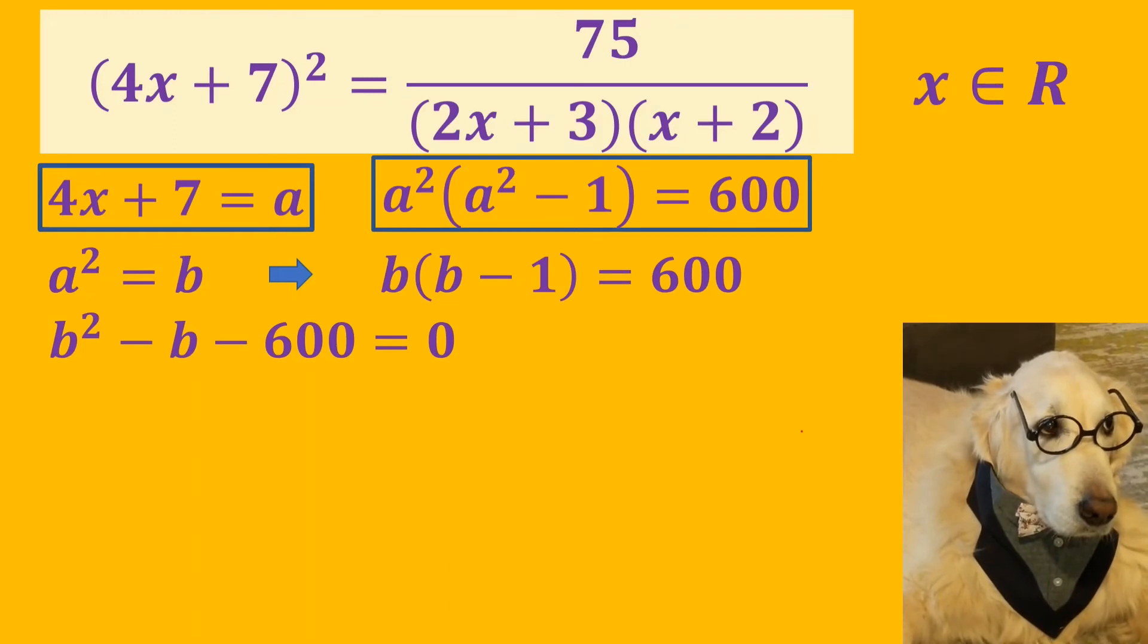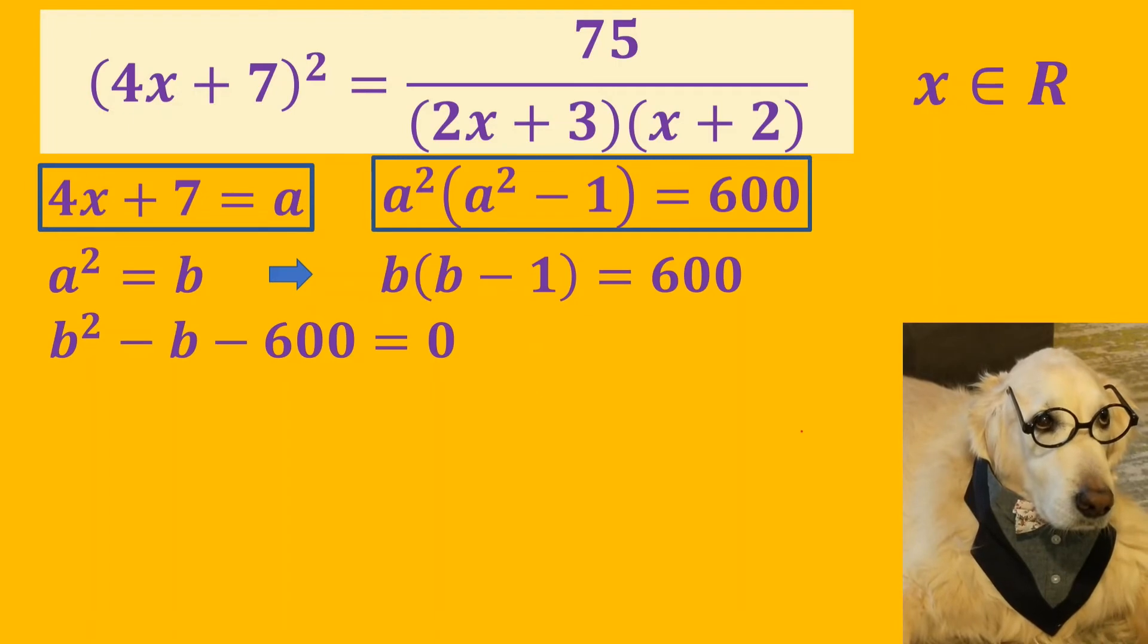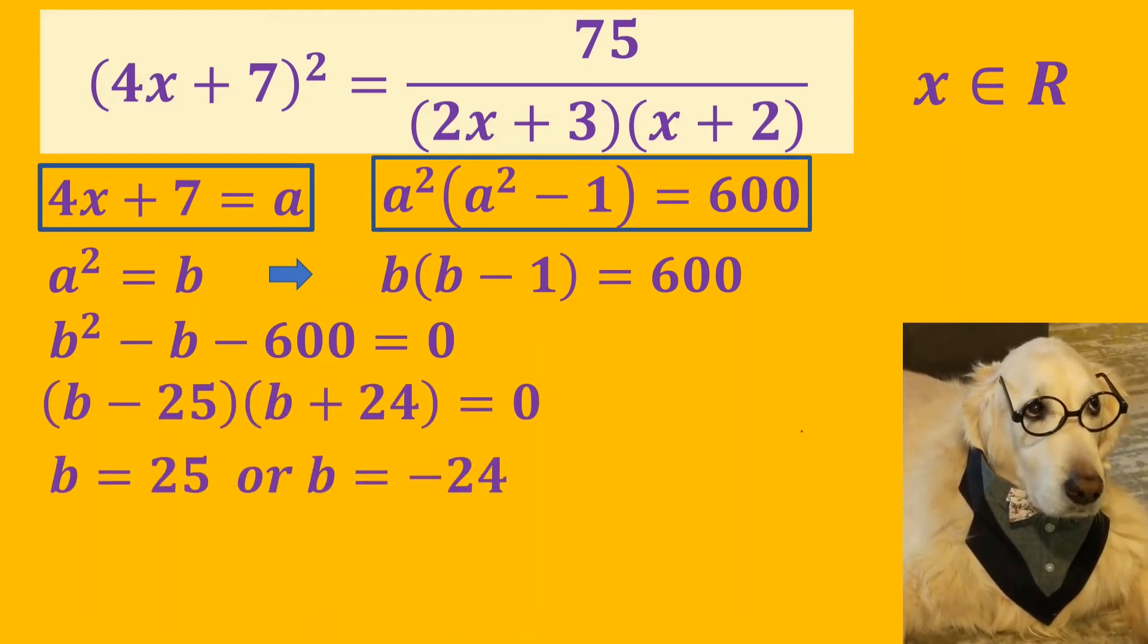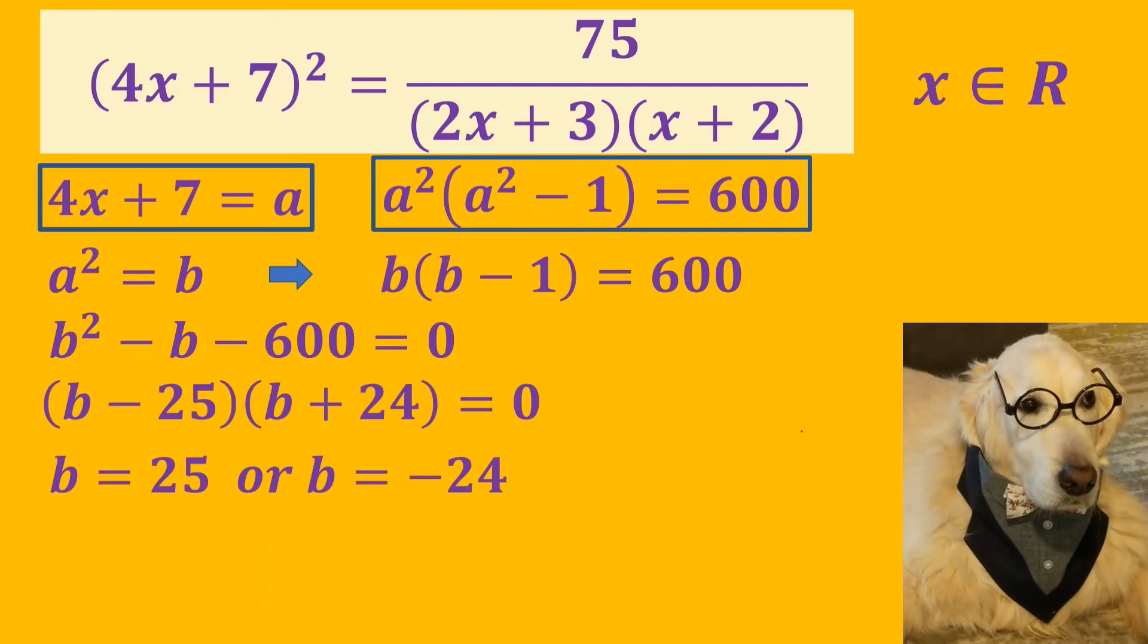So b² - b - 600 = 0. We factor the equation, and now we have two solutions for b.